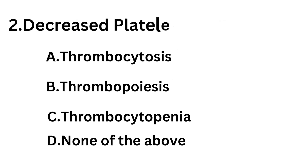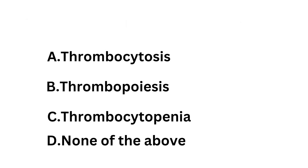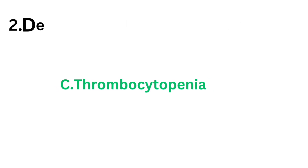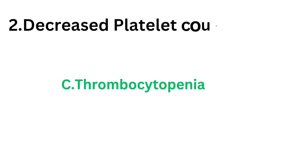Second question: decreased platelet count is — option A thrombocytosis, option B thrombopoietin, option C thrombocytopenia, option D none of the above. The correct answer is option C, thrombocytopenia.